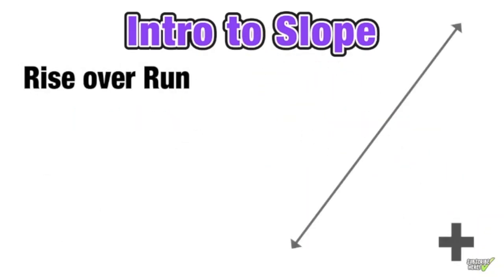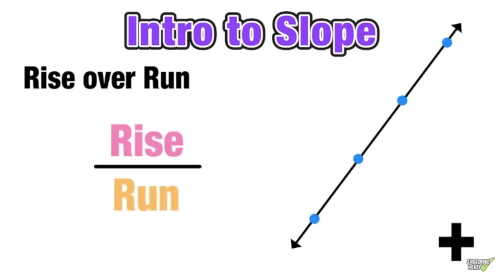We will also be referring to slope in terms of what we call rise over run. We have a line with points on the line. The rise is going to represent how many units up or down we have to move, and the run is going to be how many units left or right we have to move.